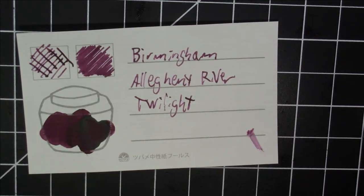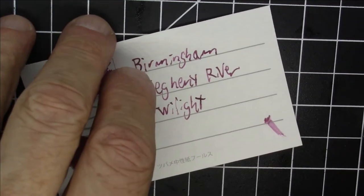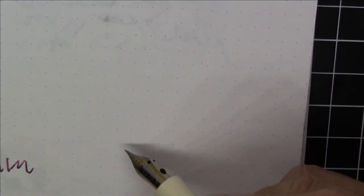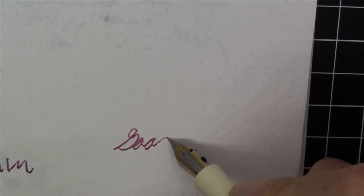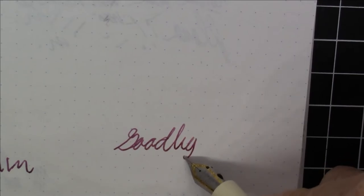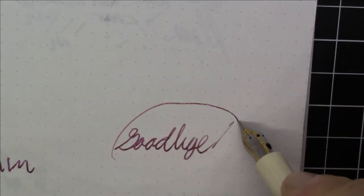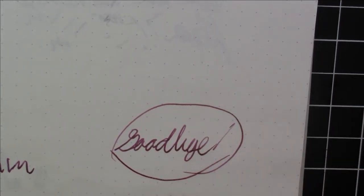So that is Birmingham Allegheny River Twilight, nice nice ink. Well, I think that will just about do it for this episode. I certainly hope you enjoyed it because I certainly enjoyed making it for you folks. And as always, until we see each other again, have a great day. Bye bye.